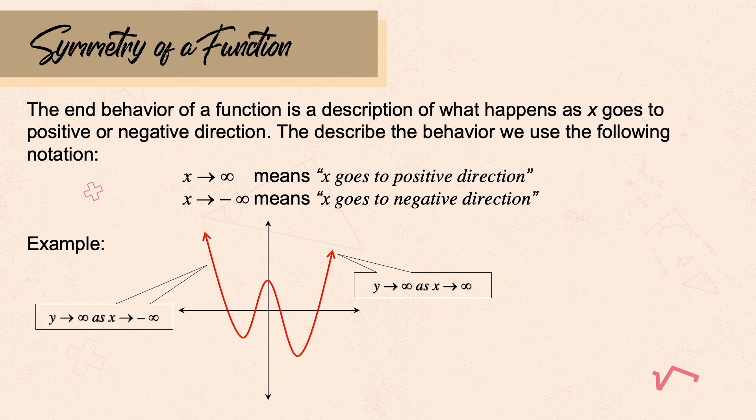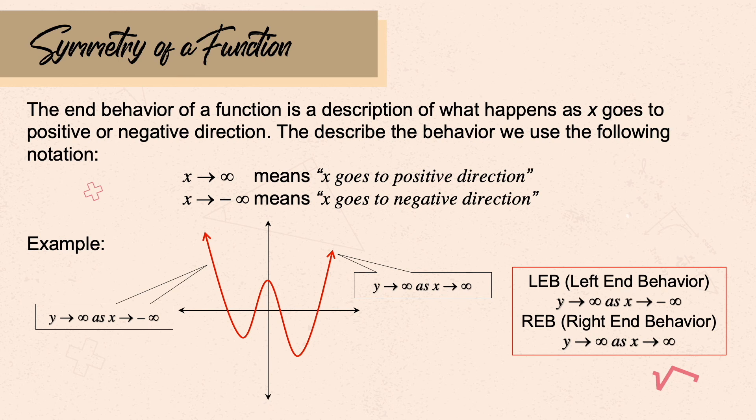Positive infinity and negative infinity — what happens to the graph, or what is the end behavior of the graph? We are not after what's going on in the middle of the graph; what we are after is the direction of the graph. To summarize: LEB (left end behavior): y goes to positive infinity as x goes to negative infinity. REB (right end behavior): y goes to positive infinity as x goes to positive infinity.